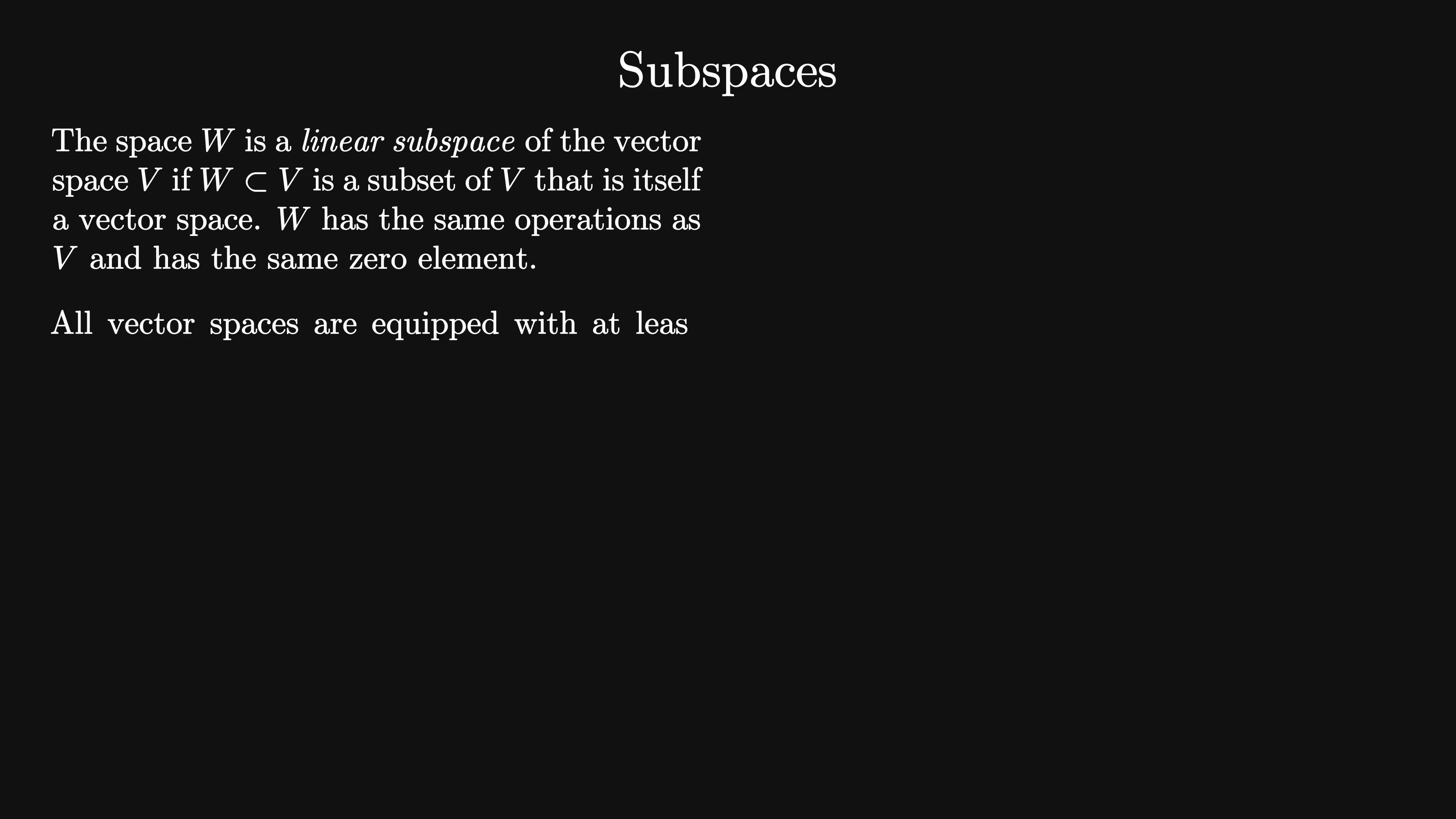Now that we have defined vector spaces, it is important to think about the concept of subspaces. The subspace W is a linear subspace of the vector space V if W is a subset of V that is itself a vector space. W must have the same operations as V, and importantly, W must contain the same zero element as V. All vector spaces are equipped with at least two linear subspaces, the entire space itself and the trivial subspace consisting of the zero element alone.